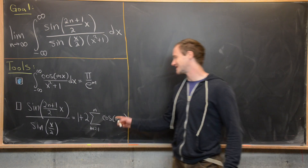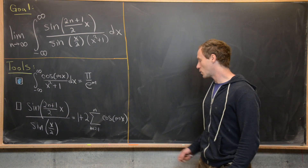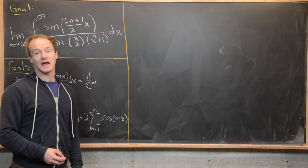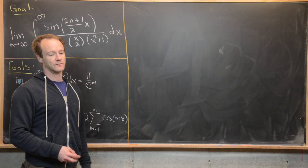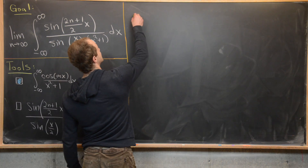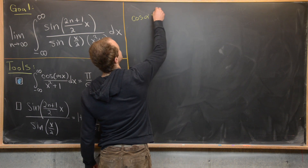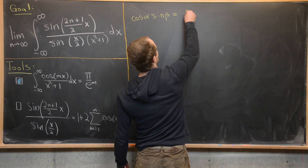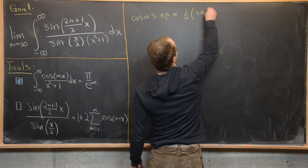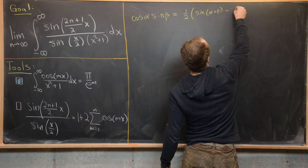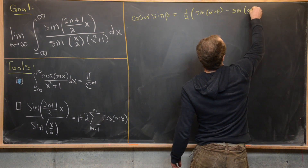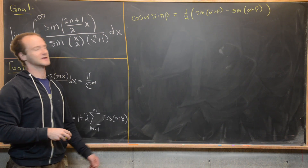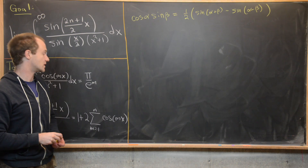Now we're going to prove this second identity. To do that we'll need a common trig identity from the sum and difference angle formulas for sine: cosine(α)·sine(β) equals one half times sine(α+β) minus sine(α−β). That follows quickly from the sum angle formula for sine.